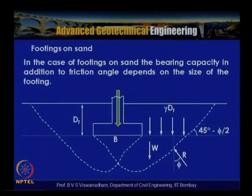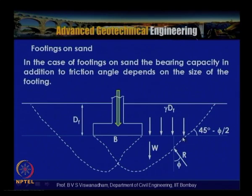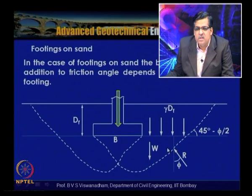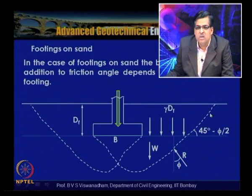Consider a footing having width b, embedded at depth d_f, subjected to a concentric load q. For footings on sand, the bearing capacity depends on friction angle and the size of the footing. The typical failure planes include an elastic wedge, radial shear zones, and resistance generated in the embedded depth zone. The inclination is 45 minus phi/2, the breadth is b, and resistance is derived from friction mobilization along the periphery of the failure surface.